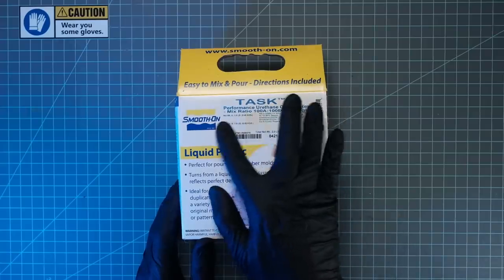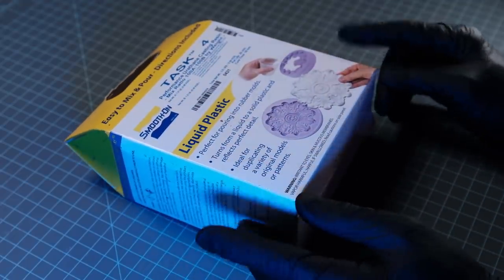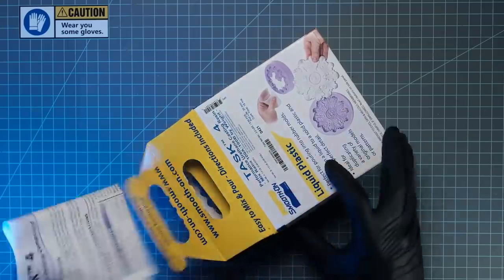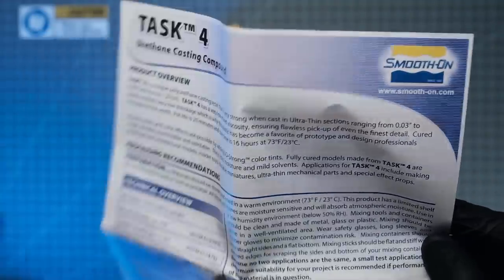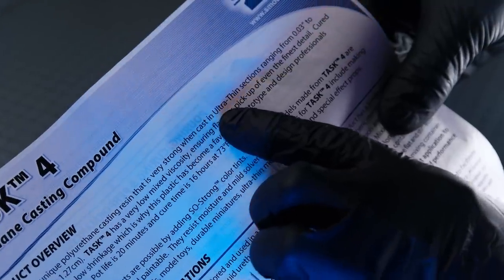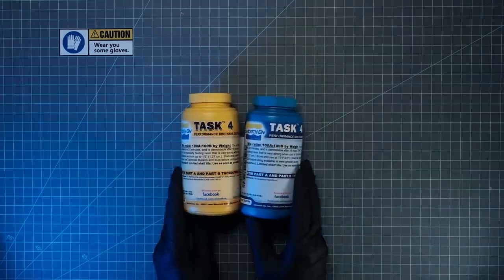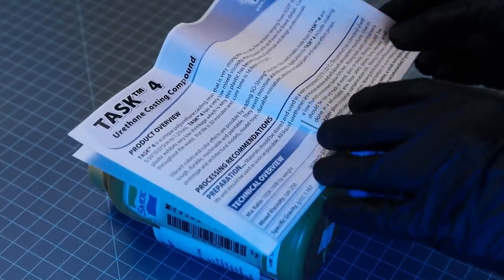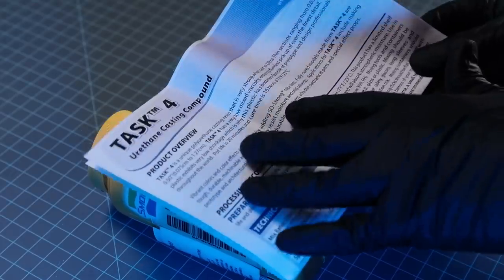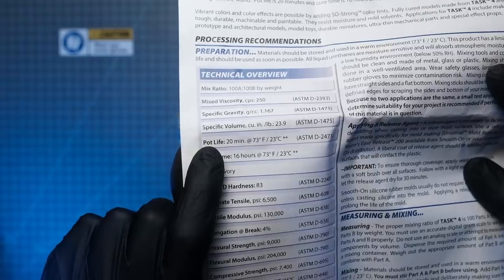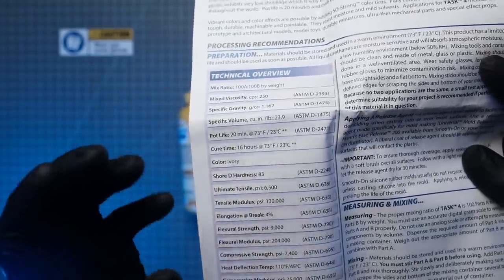So, to cast these pieces, I wanted to use Smooth-On Task 4. Craft Man, how come you're going to use that? Well, let's look at those statistics. Task 4 is a unique polyurethane casting resin that is very, look at this right there. Strong when casting ultra thin sections. And like my dad says, everything is a trade-off. With a tougher resin, you have a longer cure time, but you also have a longer open time, aka pot life, which is going to allow you to have better chance to get bubbles out, get a clean casting.